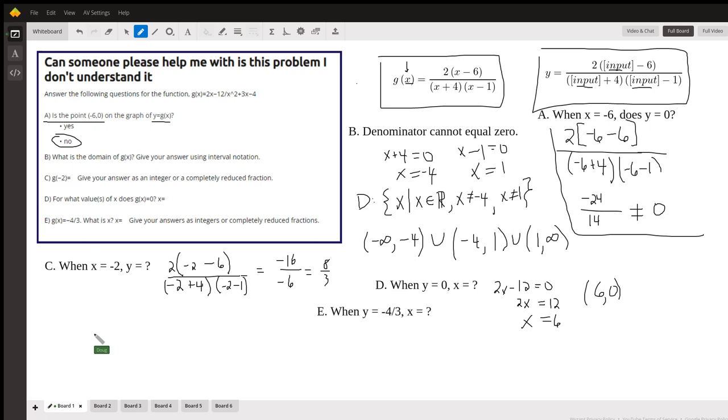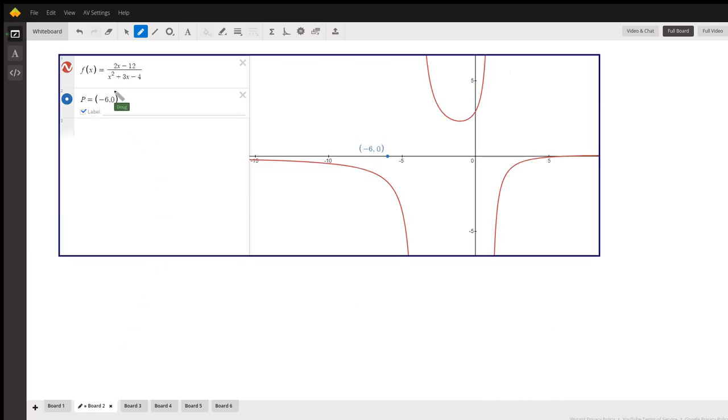Here's what the graph looks like. The red graph is the graph of the function. There's the point negative 6, 0. Definitely not on the graph.